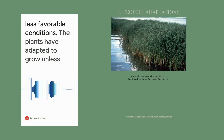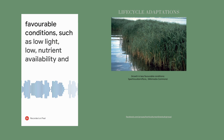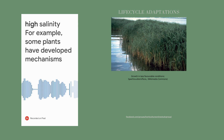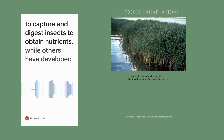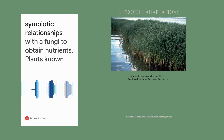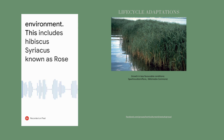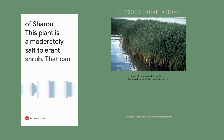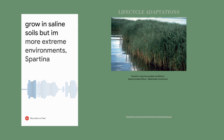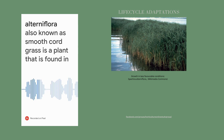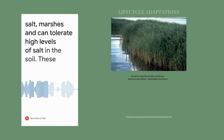Growth in less favourable conditions. Plants have adapted to grow in less favourable conditions, such as low light, low nutrient availability, and high salinity. For example, some plants have developed mechanisms to capture and digest insects to obtain nutrients, while others have developed symbiotic relationships with fungi to obtain nutrients. Plants known as halophytes have evolved to tolerate high levels of salt in their environment. This includes Hibiscus syriacus, known as Rose of Sharon — a moderately salt-tolerant shrub that can grow in saline soils. In more extreme environments, Spartina alterniflora, also known as smooth cordgrass, is a plant found in salt marshes that can tolerate high levels of salt in the soil.